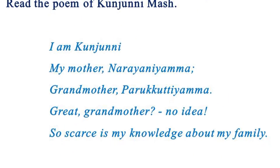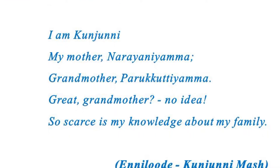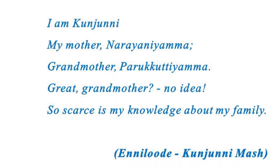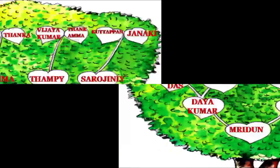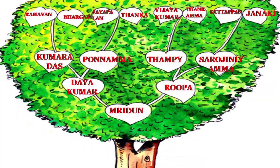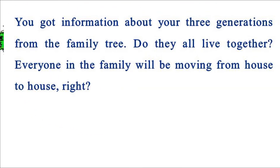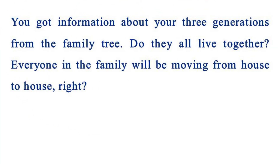Read the poem of Kunini Mash. In this poem, Kunini Mash mentioned the names of two generations of people. Similarly, find the names of you, your father, mother, father's parents, mother's parents and their parents, and write them in the picture below as a family tree. Write your name on the bottom leaf. You got information about your three generations from the family tree. Do they all live together? Everyone in the family will be moving from house to house.